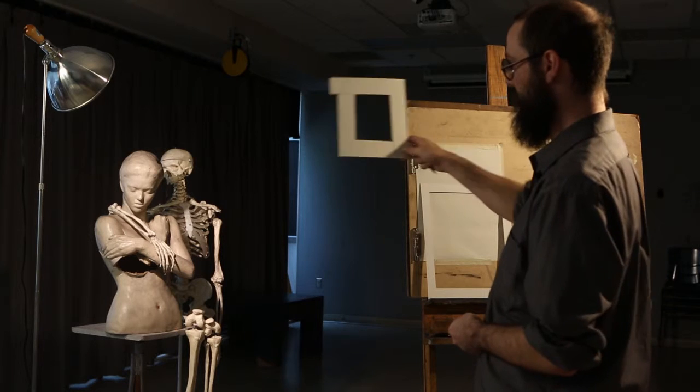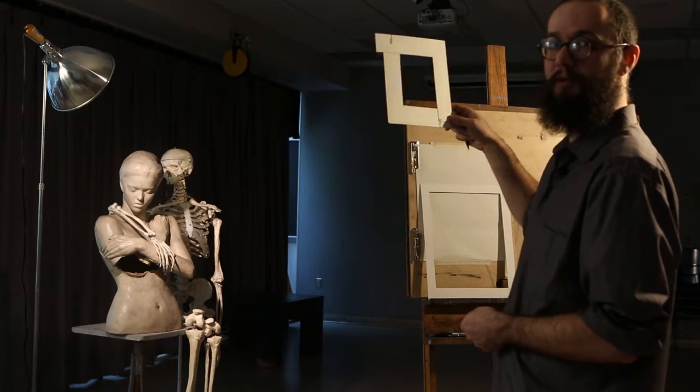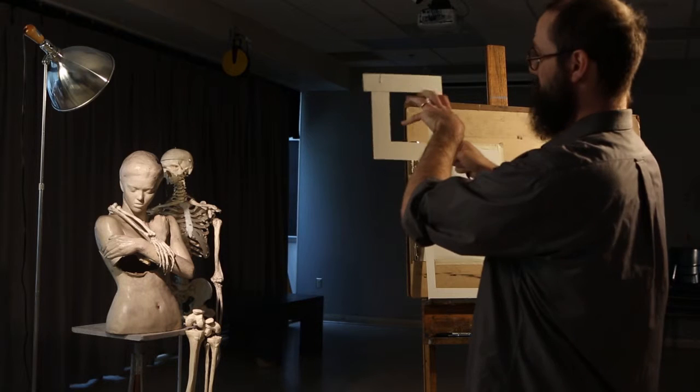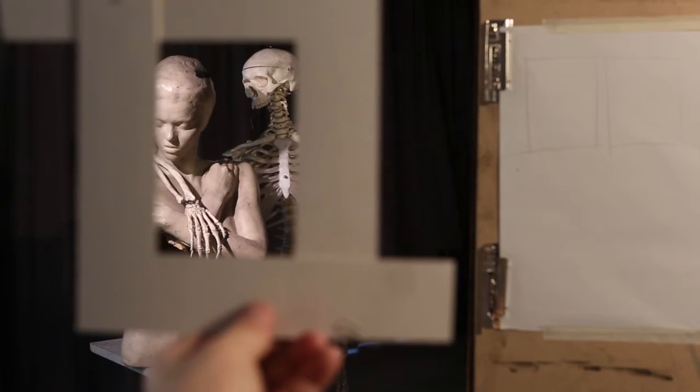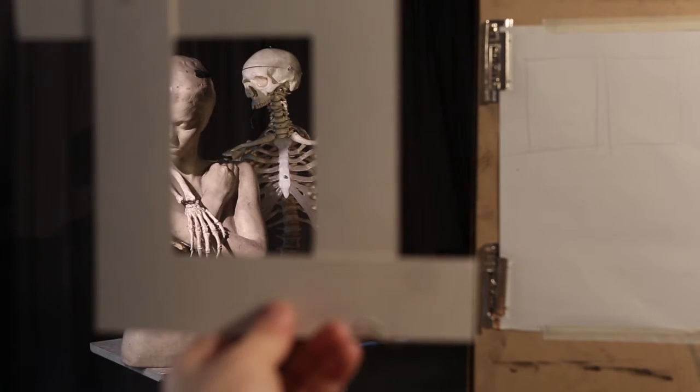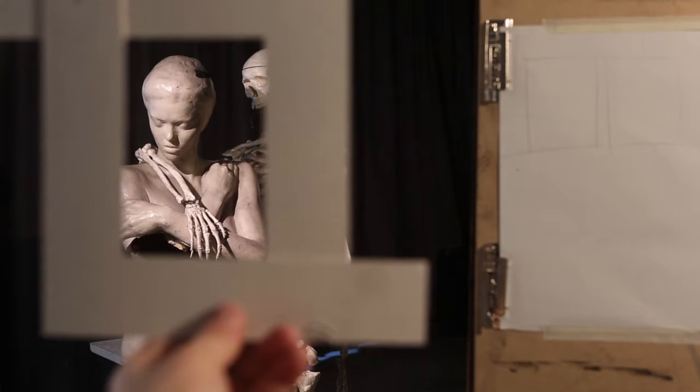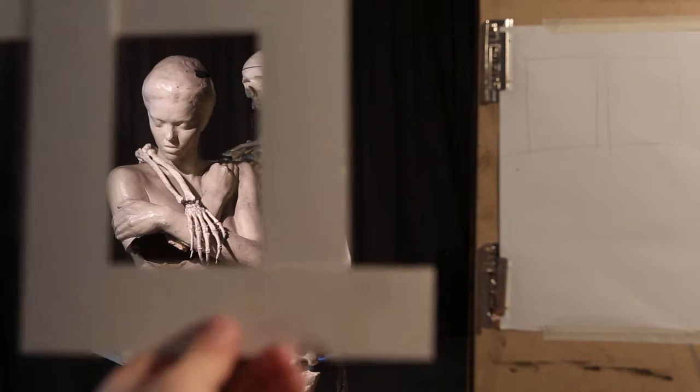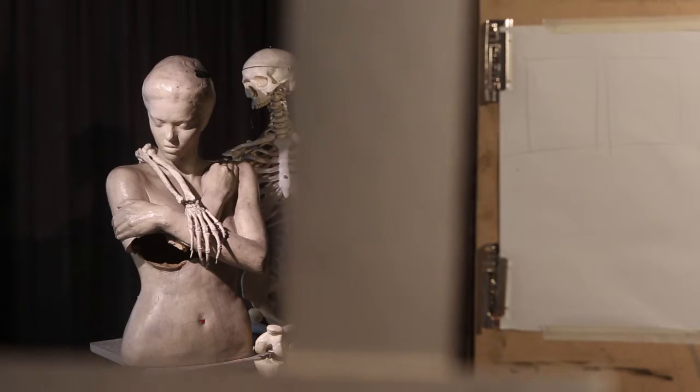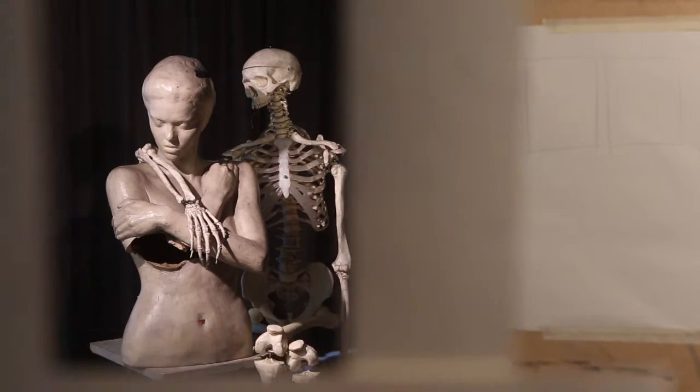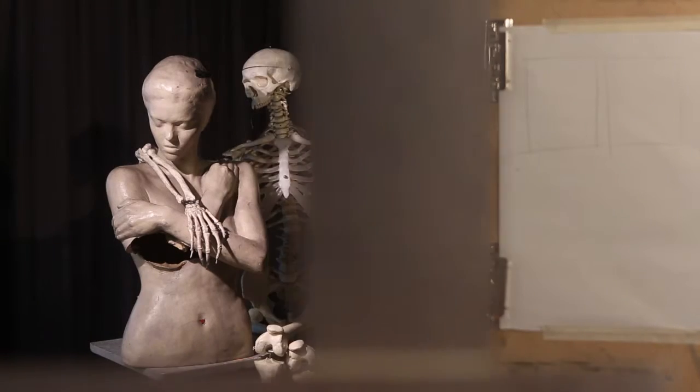You can change the distance you're holding it from yourself, and that actually changes the relationship of the size of the viewfinder to what you're actually looking at. You can hold it very far away to have a much closer and more cropped composition, or you can hold it closer to your face and that allows you to have a much larger inclusive composition.